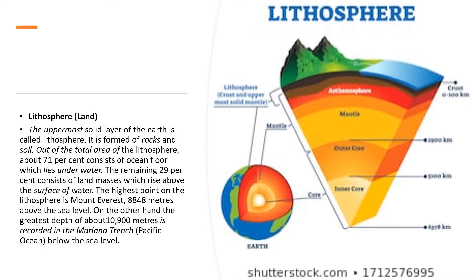Now, the highest point on the lithosphere — on the land — the highest point is Mount Everest. Its height is 8,848 meters above sea level. On the other hand, the greatest depth on the land is Mariana Trench, which is in the Pacific Ocean at 10,900 meters. We had learnt this in the previous chapter about continents and oceans. So in the lithosphere, the highest point is Mount Everest and the deepest point is Mariana Trench.